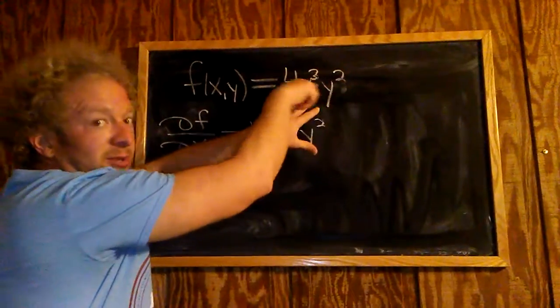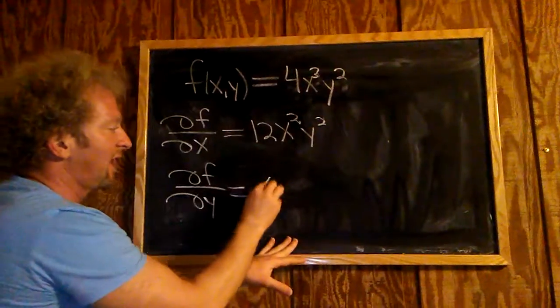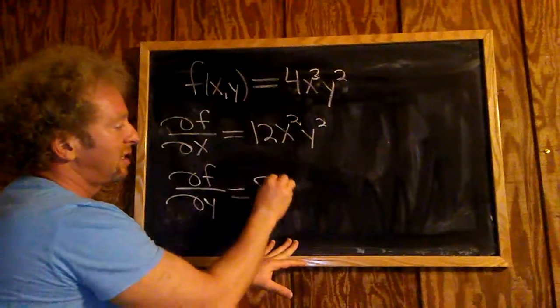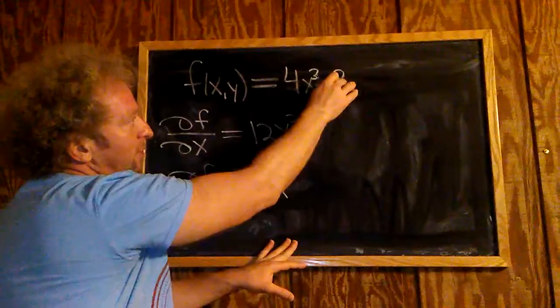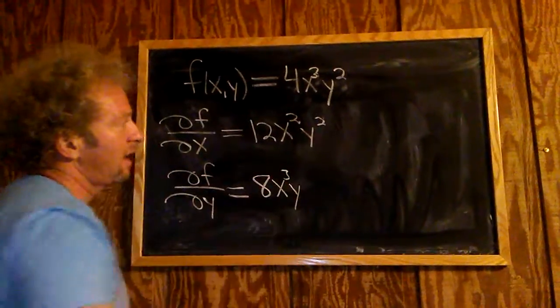So 2 times 4, bring down the 2 using the power rule, 2 times 4 is 8. So you get 8x cubed, and we subtract 1 from the 2, so we get y. And that's it.